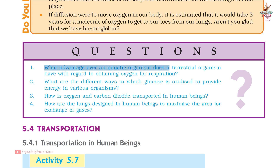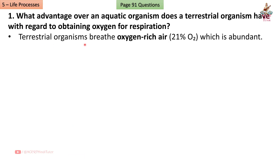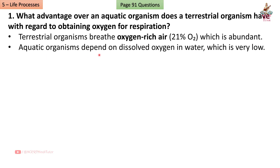Answer: The inner lining of the small intestine has many finger-like villi. Villi increase the surface area for absorption. Each villus has blood capillaries to transport absorbed nutrients to all body cells.